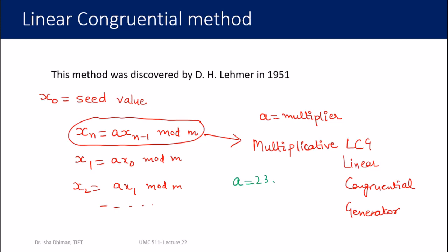Originally, Lehmer used the values a = 23 and m = 10⁸ + 1.